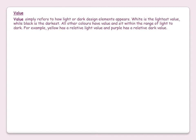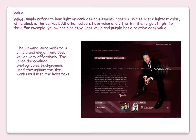Value simply refers to how light or dark design elements appear. White is the lightest value while black is the darkest. All other colours have value and sit within the range of light to dark. For example, yellow has a relatively light value and purple has a relatively dark value. The Howard Wing website is simple and elegant and uses value very effectively — the large dark-value photograph background used throughout the site works well with the light text.